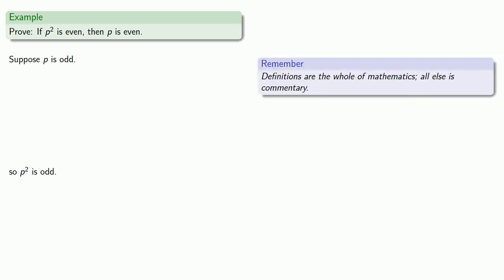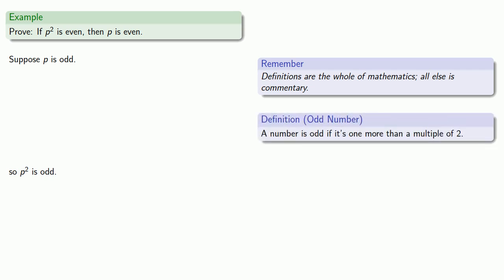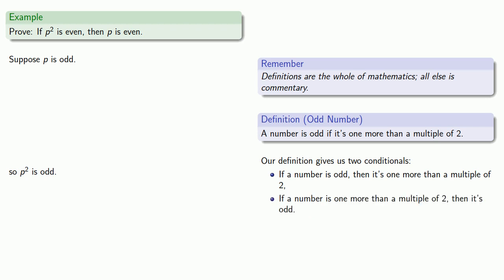Definitions are the whole of mathematics. All else is commentary. A number is odd if it's one more than a multiple of two, and our definition gives us two conditionals. If a number is odd, then it's one more than a multiple of two. And if a number is one more than a multiple of two, then it's odd. We have that p is odd, and so we know that p is 2k + 1. And we get a conclusion like p² is odd if we start with a number is one more than a multiple of two. So we know that the preceding line should say that p² is 2 times something plus 1.